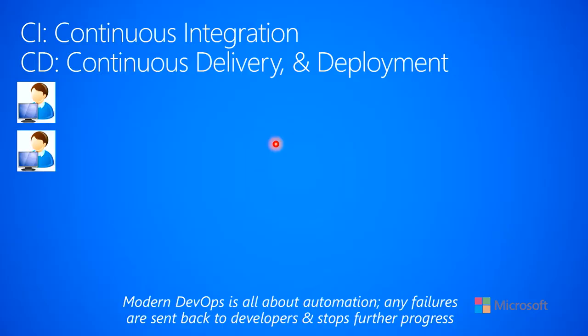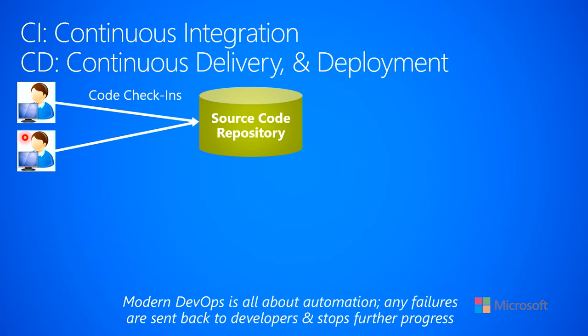The last thing I'll talk about in this section is continuous integration, otherwise known as CI, and continuous delivery and deployment, both of which go by the acronym CD. This is about the whole developer flow. What I show on this slide here are two software developers — and of course you may have many of them — that are working on a particular service. Occasionally, these software developers are going to check in code into some kind of source code repository, like GitHub, which is a typical example.